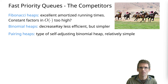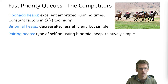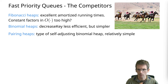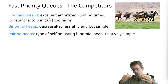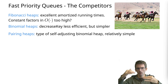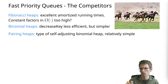As an alternative, pairing heaps. We haven't talked about pairing heaps before, but pairing heaps are a type of self-adjusting binomial heap. If you think of balanced binary search trees — AVL trees, red-black trees — those are self-adjusting in the sense that if they get too unbalanced, they re-balance. This is a similar concept just for binomial heaps, and they actually perform very well.